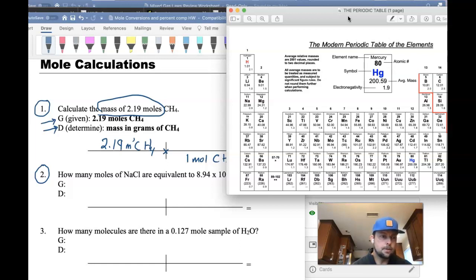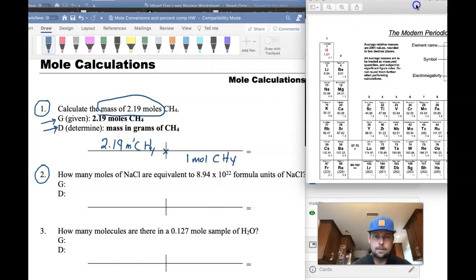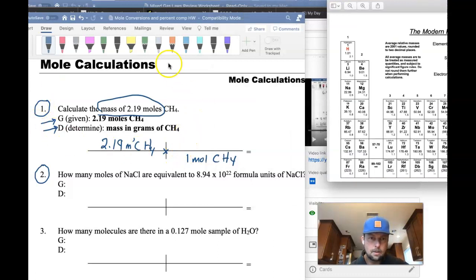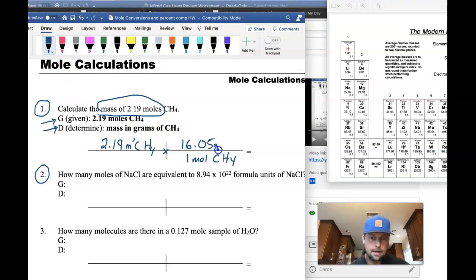So if I add up the masses of those, we get 16.05 grams of CH4 in 1 mole. And then when I cross off moles, I'm going to be left with grams of CH4 as my answer. So 2.19 times 16.05 grams per mole is going to give me an answer of 35.15 grams of CH4.